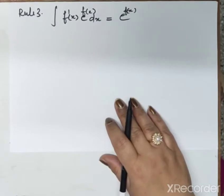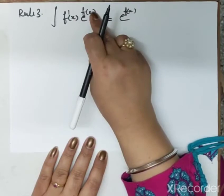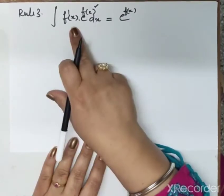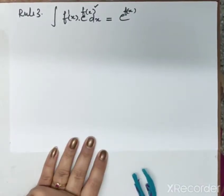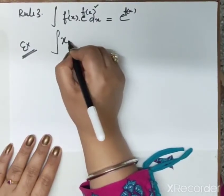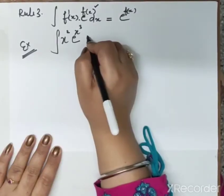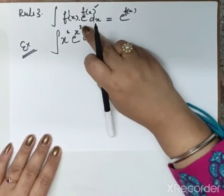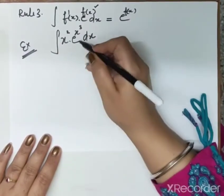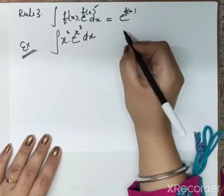Next is Rule 3: if our expression is in the form where e is raised to the power f(x) — the main function — and alongside it is multiplied by its own derivative, then how do we solve it in this case? Let us take an example: integrate x² · e^(x³) dx. You can notice that the derivative of x³ is 3x², and x² is given alongside as a multiple. The main function is the power of e, that is f(x).